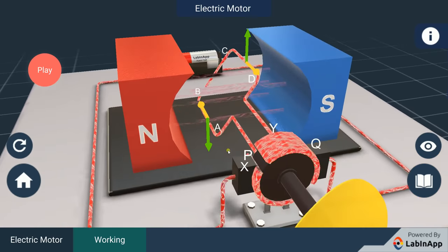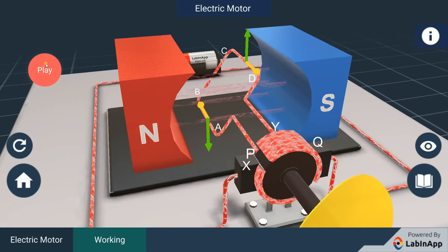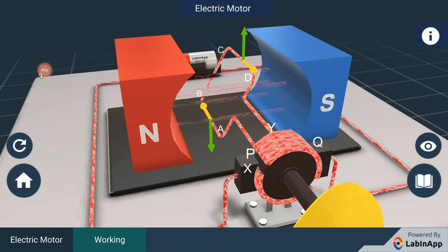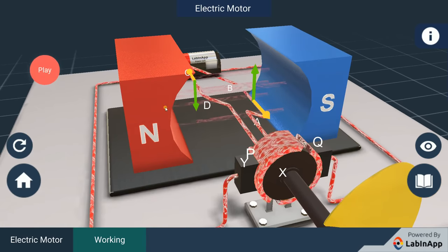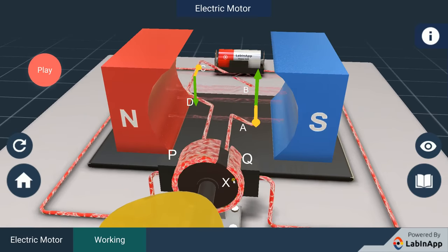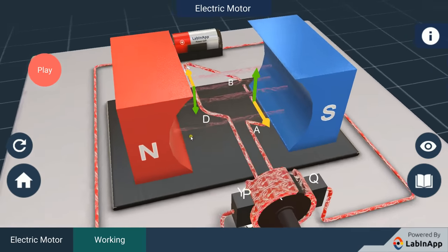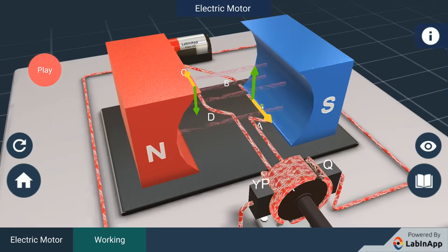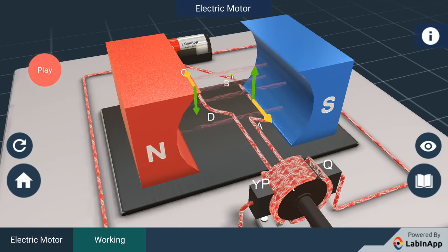At half rotation, Q makes contact with the brush X and P with brush Y. Therefore, the current in the coil gets reversed and flows along the path D, C, B, A.